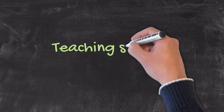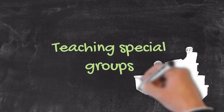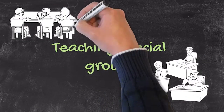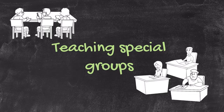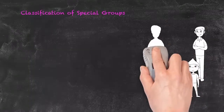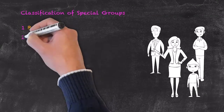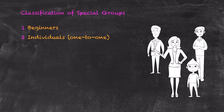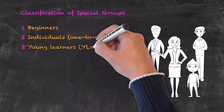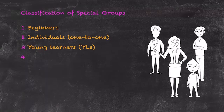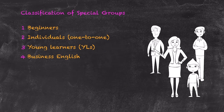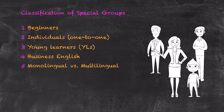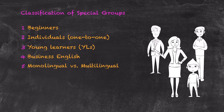Within the teaching of ESL throughout the world, there's a whole spectrum of the types of groups that you may be involved in. We'll break those types of groups down into five classifications: beginners, individuals (one-to-one teaching), young learners or teaching children, English for specific or special purposes (including business English), and monolingual or multilingual classes. We'll look at each category and what we specifically need to do when teaching those special groups.